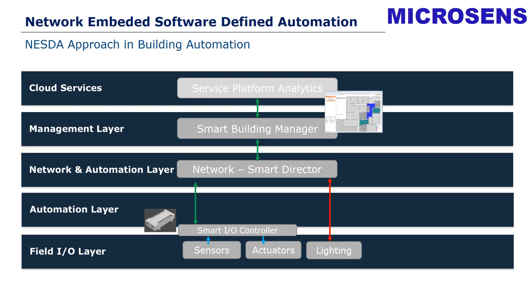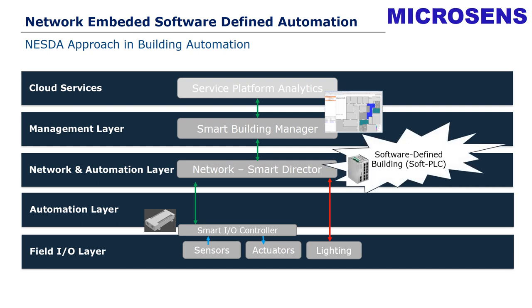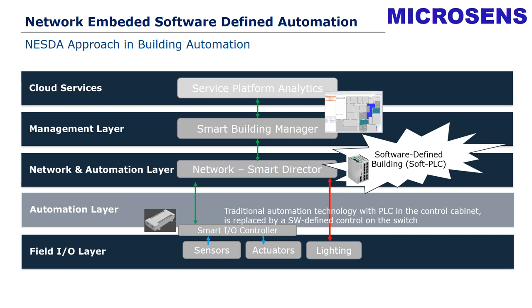What you can see here is that we jump over a layer — the automation layer. This automation layer, which was previously responsible for doing the automation, is in our case not really necessary, because we have implemented a software-defined PLC, or soft PLC, into the network layer, which covers all the tasks for automation that were previously installed in the cabinets of the automation layer. By doing this, the traditional automation technology with PLC in the control cabinet is replaced by software-defined control on the switch.